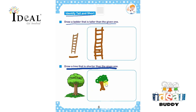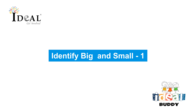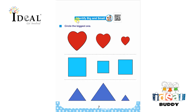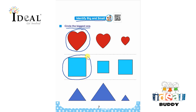Here they have to circle the biggest one. There are three heart shapes given and they have to circle the biggest heart. After that there are three squares, so they have to circle the biggest one. Next there are three triangles given, so they have to circle the biggest triangle. Here both concepts are combined — shapes revision is also happening and children are also learning about big and small.